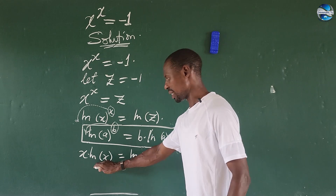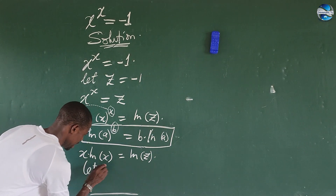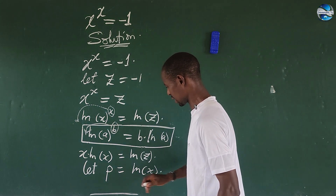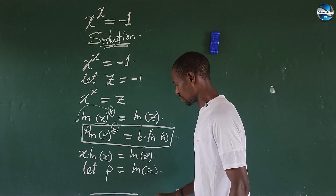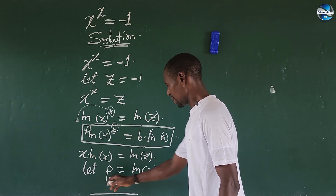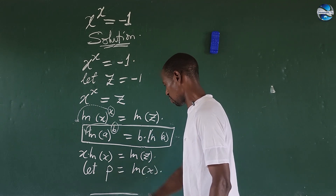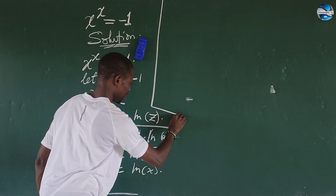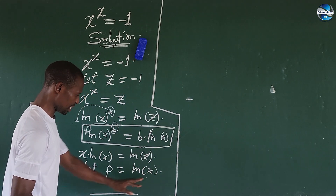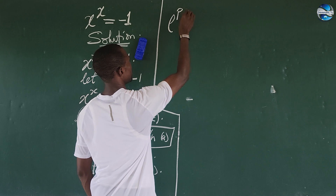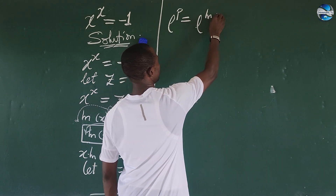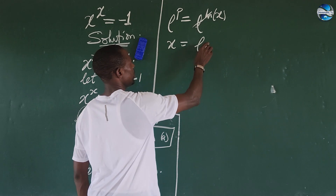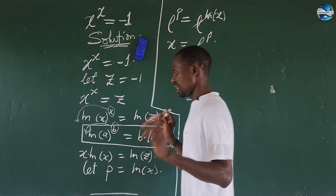From here we want to do another substitution. We're going to let p be equal to ln of x. So if p equals ln of x, we want to make x the subject of the formula. We bring e into the system: e to the power of p equals e to the power of ln of x. Since e and ln cancel, we get x is equal to e to the power of p.